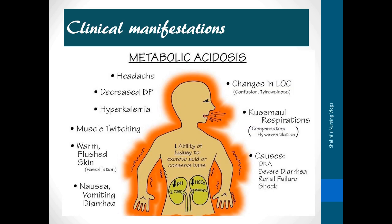Clinical manifestations depend on the underlying cause. Metabolic acidosis is usually a manifestation of another disease like DKA, severe diarrhea, renal shock, or renal failure. Common manifestations include headache, increased pressures, hyperkalemia, muscle twitching, warm or flushed skin, nausea, vomiting, diarrhea, change in consciousness, and Kussmaul respiration. These are varied symptoms seen when the kidney's ability to excrete acid or conserve base is reduced.